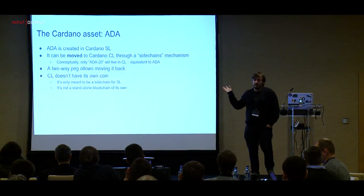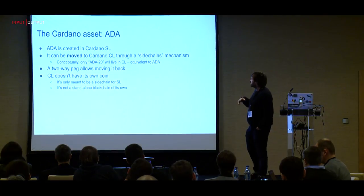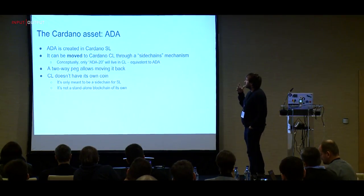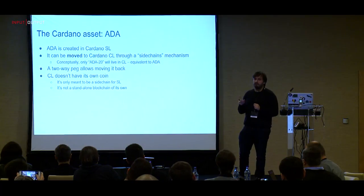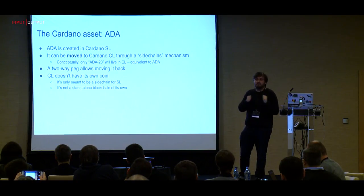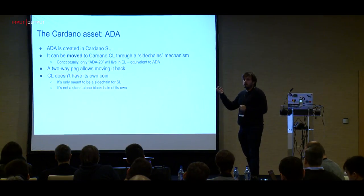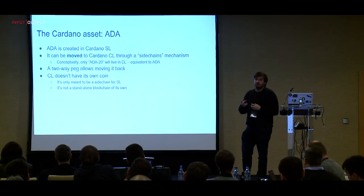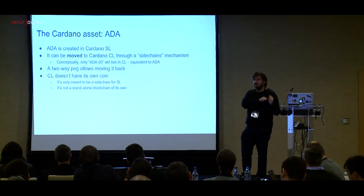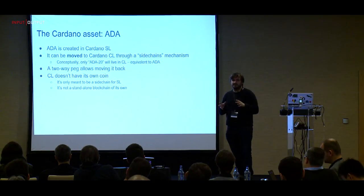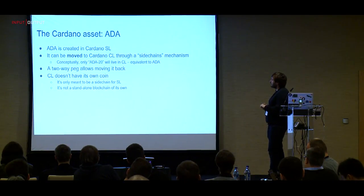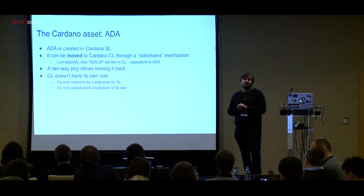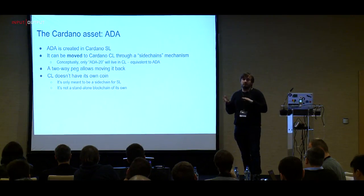ADA is the home asset of the settlement layer but can be moved. The computation layer doesn't have its own coin. You can think of ADA and ADA20 — essentially the same token because it's two-way pegged. A token on the computation layer is technically a different asset on a different blockchain, but has the same value and can always be redeemed. The computation layer is only ever meant to be a sidechain — not a standalone blockchain.